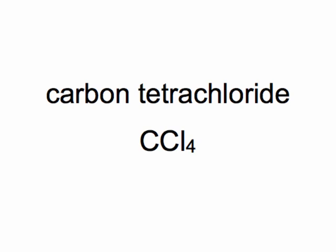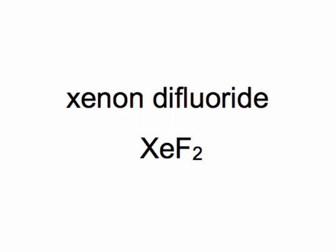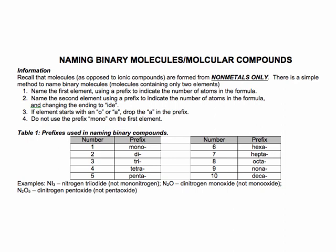The last example is xenon difluoride. Xe is xenon, difluoride is F₂, so it's XeF₂. Please make sure you know how to spell fluoride: F-L-U-O-R-I-D-E. I'll be checking that on your exams and quizzes. Notice in all these examples, the second element has the element changed to ide. The first element is just written as is. And that's how you name molecular compounds.